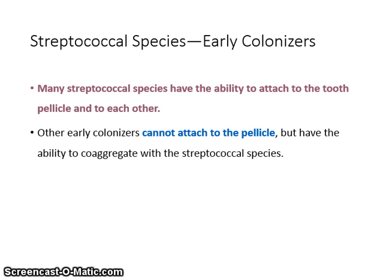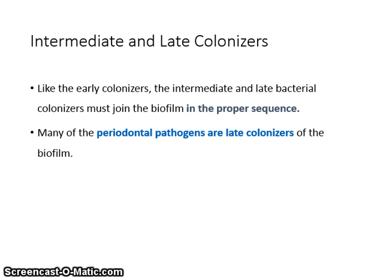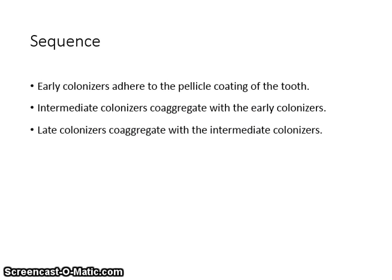Many streptococcal species have the ability to attach to the tooth pellicle and to each other. Other early colonizers cannot attach to the pellicle but have the ability to co-aggregate with the streptococcal species. Like the early colonizers, intermediate and late bacterial colonizers must join the biofilm in the proper sequence. Many of the periodontal pathogens are late colonizers. The sequence is: early colonizers adhere to the pellicle; intermediate colonizers co-aggregate with early colonizers; late colonizers co-aggregate with intermediate colonizers.